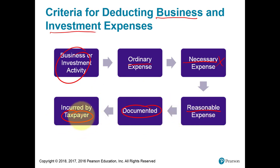For this last requirement — it has to be the taxpayer's expense — here's an example. Let's say you have a mortgage; you own a home and pay mortgage interest and real property tax. But let's say I'm so generous that I'll pay it for you. Well, you didn't pay it, so you can't deduct it. What you'd want instead is for me to gift you the money so now you can pay it yourself — you're the owner, you're liable on the mortgage.